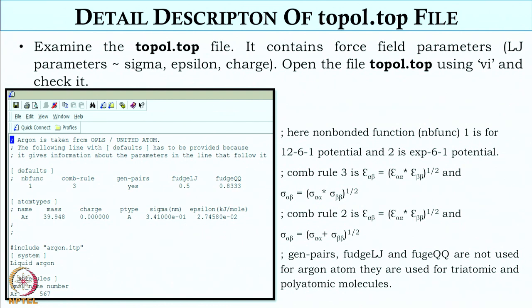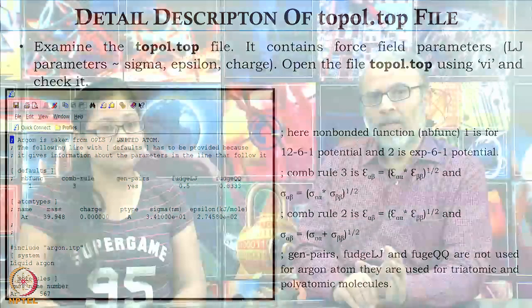The second section is the atom type, where we have to define the type of atoms — here there is just one, that is the argon atom. We have to specify the charge and mass of the argon atom, then sigma in nanometers and epsilon in kilojoules per mole. All these parameters we will get from the OPLS directory. The file names are ffbonded and ffnonbonded.itp. For each molecule and each atom, sigma, epsilon, and charge are defined there, and for each different force field, the parameters will vary.